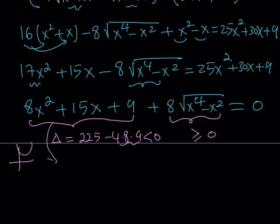In other words, this quadratic has to be greater than 0, not even equal. So this is like a positive quantity. This is a non-negative quantity. Their sum will never be 0.